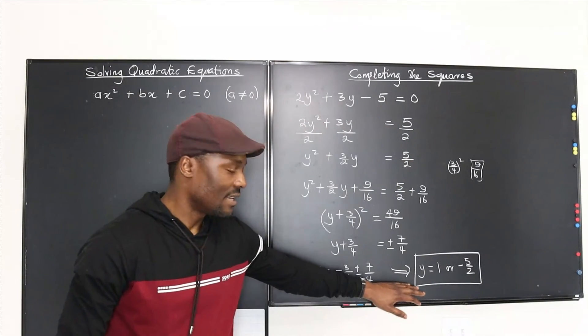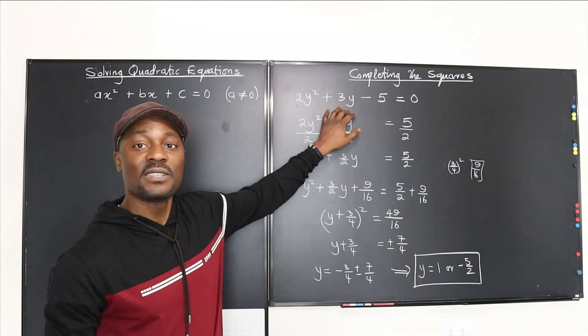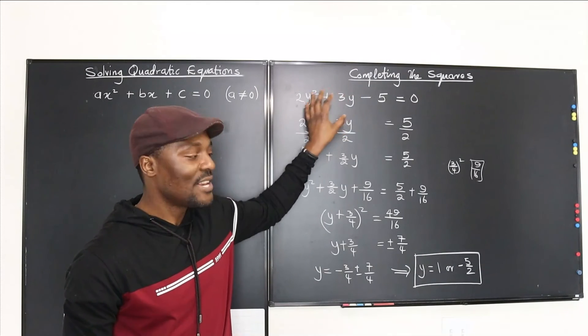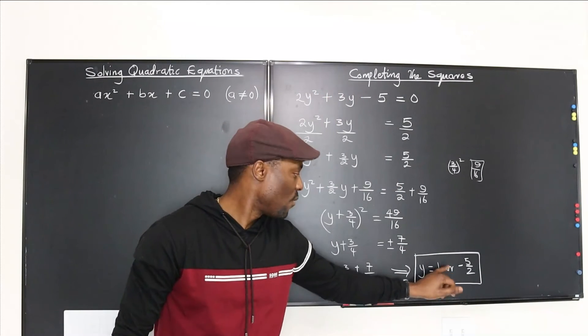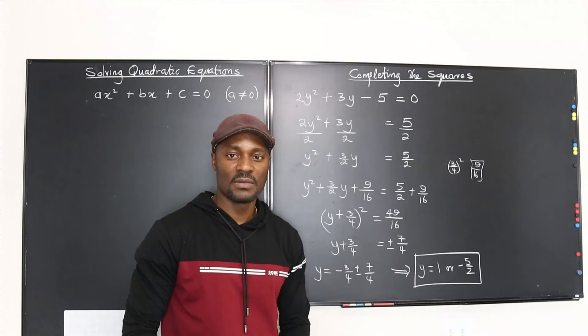This gives y equals negative 3 over 4 plus 7 over 4, which is 4 over 4, equaling 1. Or y equals negative 3 over 4 minus 7 over 4, which is negative 10 over 4, simplified to negative 5 over 2. Those are the two possible answers — the same as factoring would give: y equals 1 or negative 5 over 2.